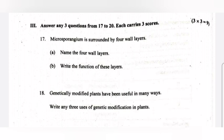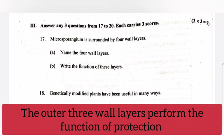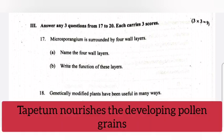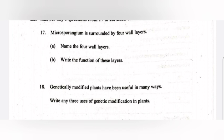B - Write the function of these layers. Answer: The outer three wall layers perform the function of protection, and tapetum nourishes the developing pollen grain. Question 18: Genetically modified plants have been useful in many ways.